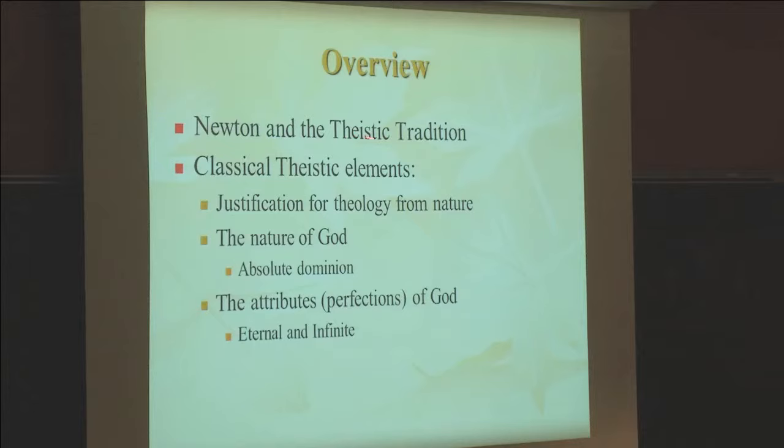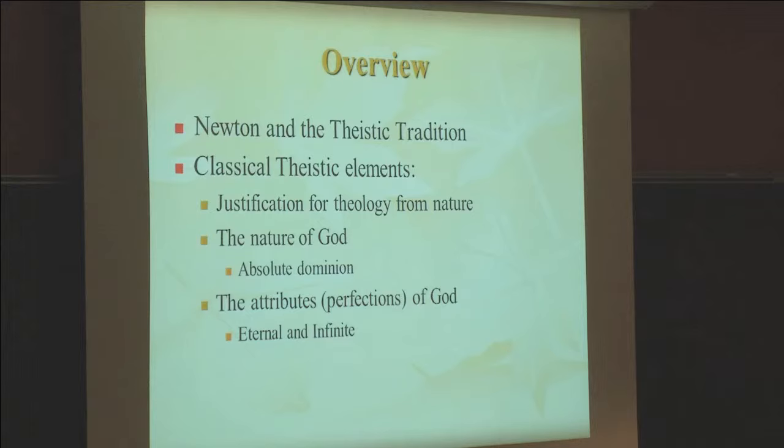While the reformers rhetorically distanced themselves from non-scriptural theological considerations, they incorporated its organizational structure and concerned themselves with the same central topics, especially regarding discussions of God's nature. Specifically, I'm going to look at three elements within the classical theistic tradition that Newton is using: justification for theology from nature, the nature of God which I show is absolute dominion, and the attributes or perfections of God — specifically eternal and infinite, although there are others like omniscience.